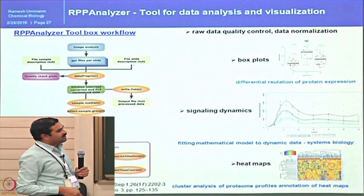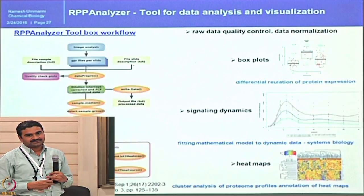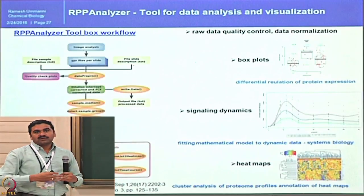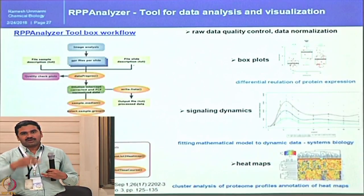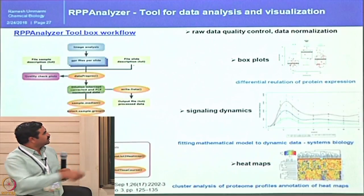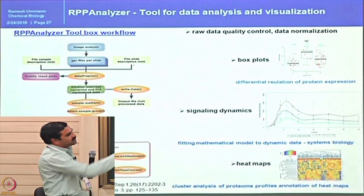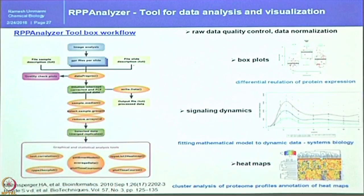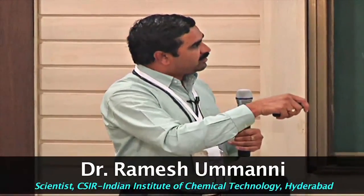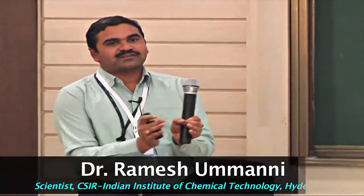After quality control, serial dilution data is used to confirm antibody linearity — ideally an R value of 1, but at least 0.9 as a cutoff. Box plots show whether proteins are upregulated or downregulated. Signaling dynamics can also be measured: for example, tracking samples from 0 to 10 minutes shows how protein expression rises and falls over time. This data can be fitted into mathematical models to map pathway regulation — how pathways are stimulated, activated, or inactivated — and heat maps reveal clusters of proteins that alter together.